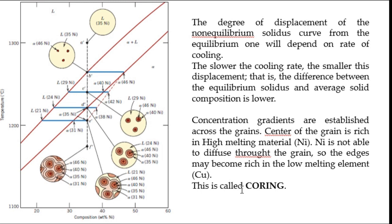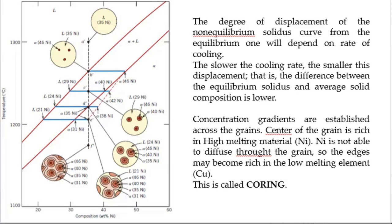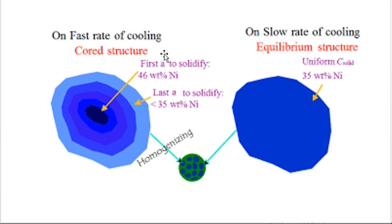The problem with coring is that the grain boundaries are rich in the low melting component. The phase diagram indicates melting starts at point D', but since the solidus line has shifted and copper is present at the boundary, melting can begin at a temperature even lower than D'. You may expect melting at, say, 1000°C based on the phase diagram, but it may start before that—potentially causing engineering failures.